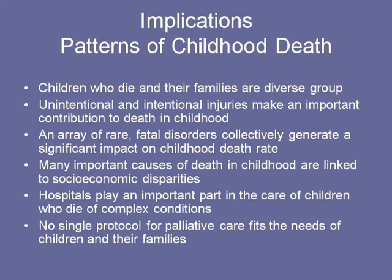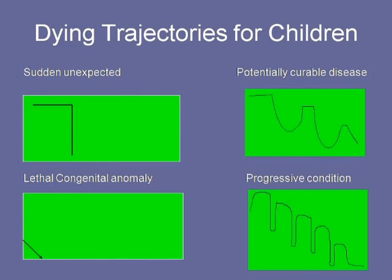The dying trajectories for children are very similar to adults: sudden unexpected death such as an accident; lethal congenital anomaly where patients survive a very short period; potentially curable disease with peaks and troughs; and the progressive condition with slow deterioration, some improvement but not back to baseline, with acute episodes.